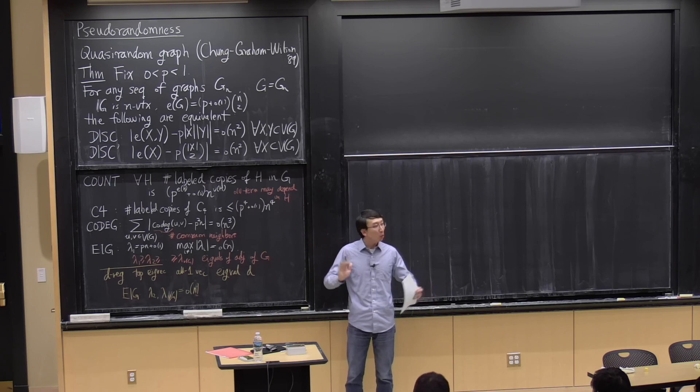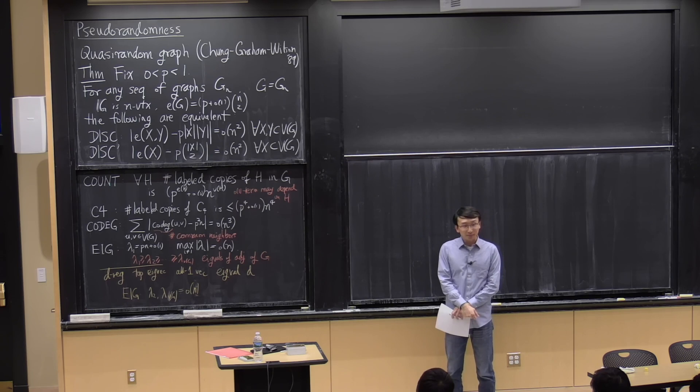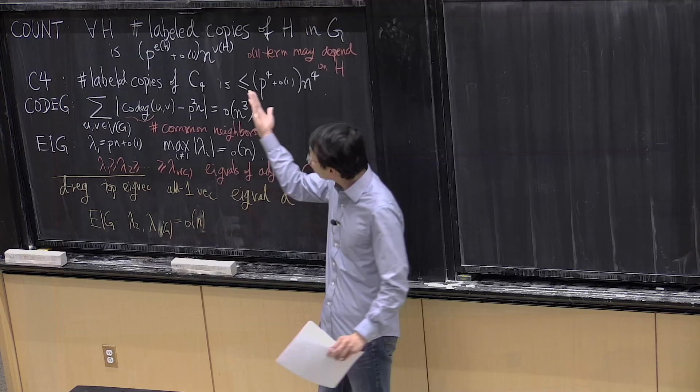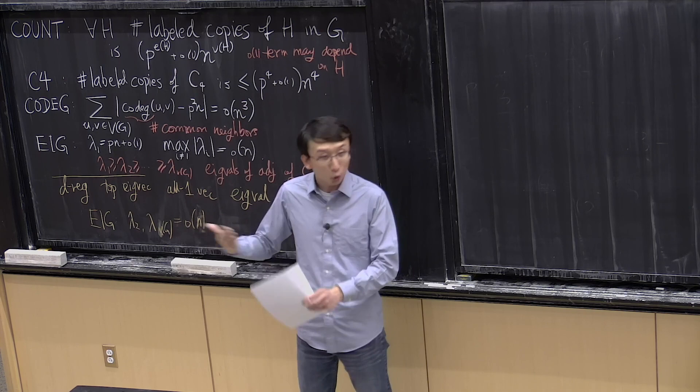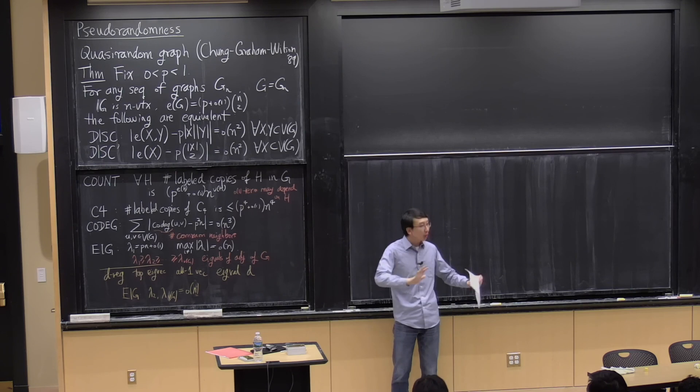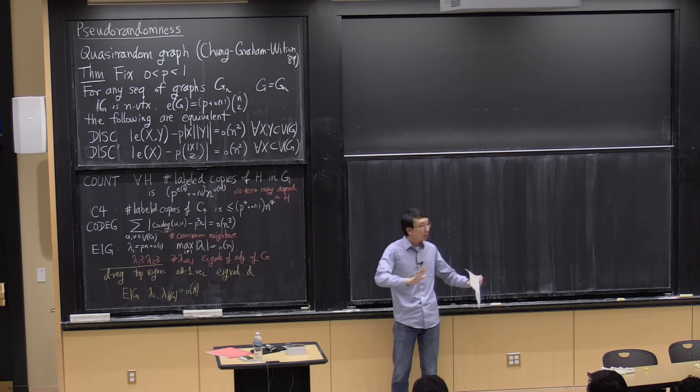We'll prove that all of these properties are equivalent to each other. All of these properties should be thought of as characterizations of pseudo-randomness, and this theorem guarantees that it doesn't matter which one you use — they're all equivalent. Our proofs won't use any fancy tools like Szemerédi's regularity lemma, and all of the quantitative errors are reasonably dependent on each other.